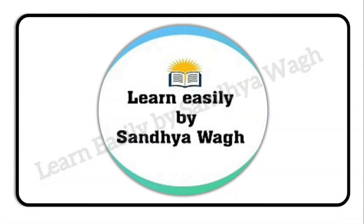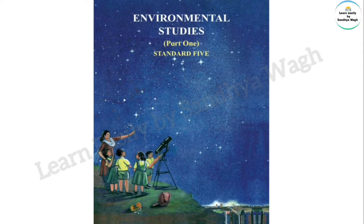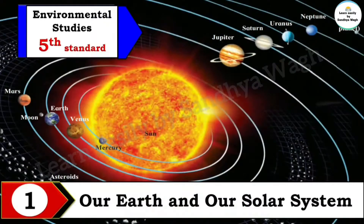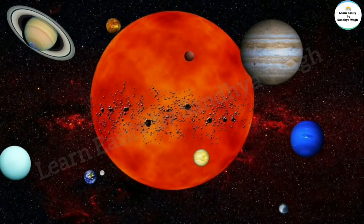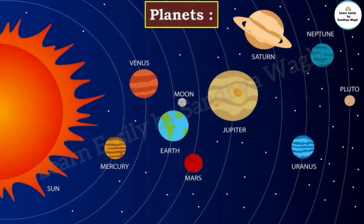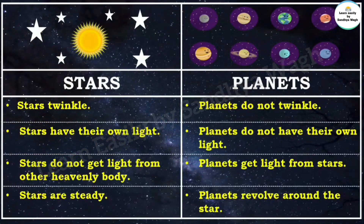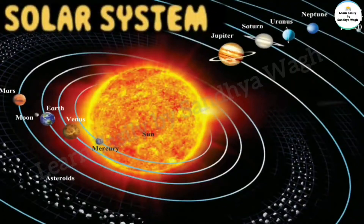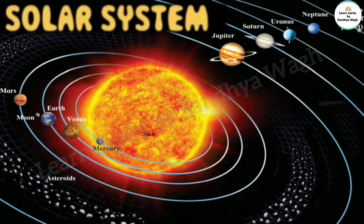Hello dear students, we are studying the first lesson of environmental studies textbook, that is our Earth and our solar system. In the previous video we studied what are heavenly bodies, what are stars, what are planets, and the differences between stars and planets. Now in today's video we will learn about the solar system, but before that let's understand about our planet Earth.